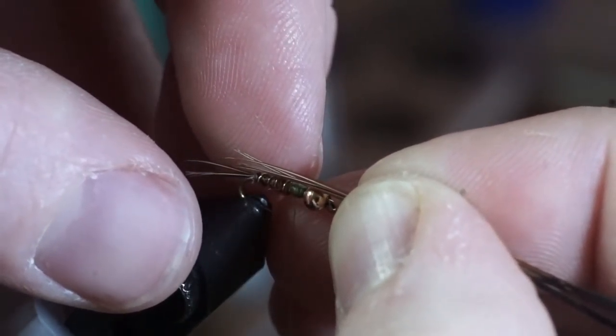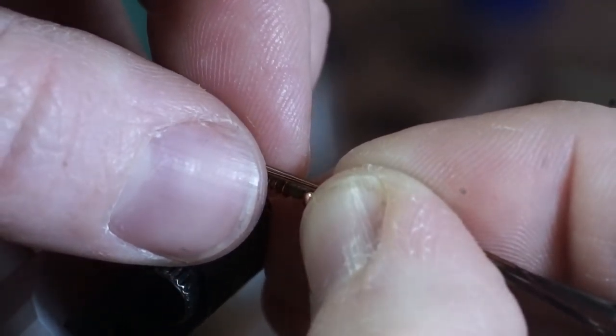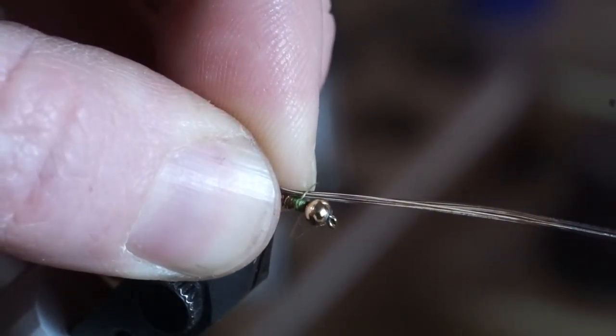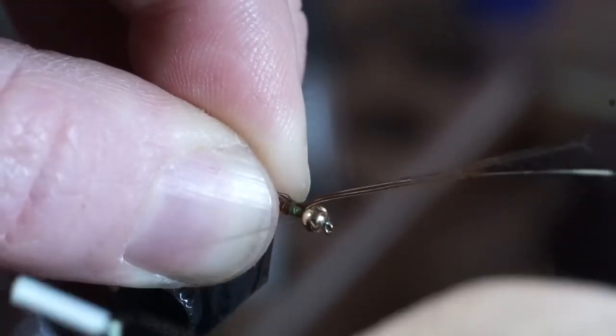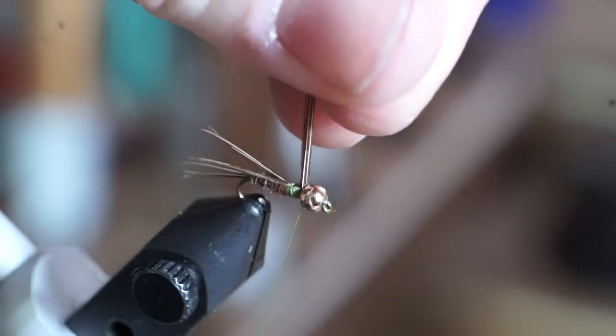Most people measure out about a hook shank length and tie in. However, I like these a bit longer. If you tie these down tight, you can just break off the waste.